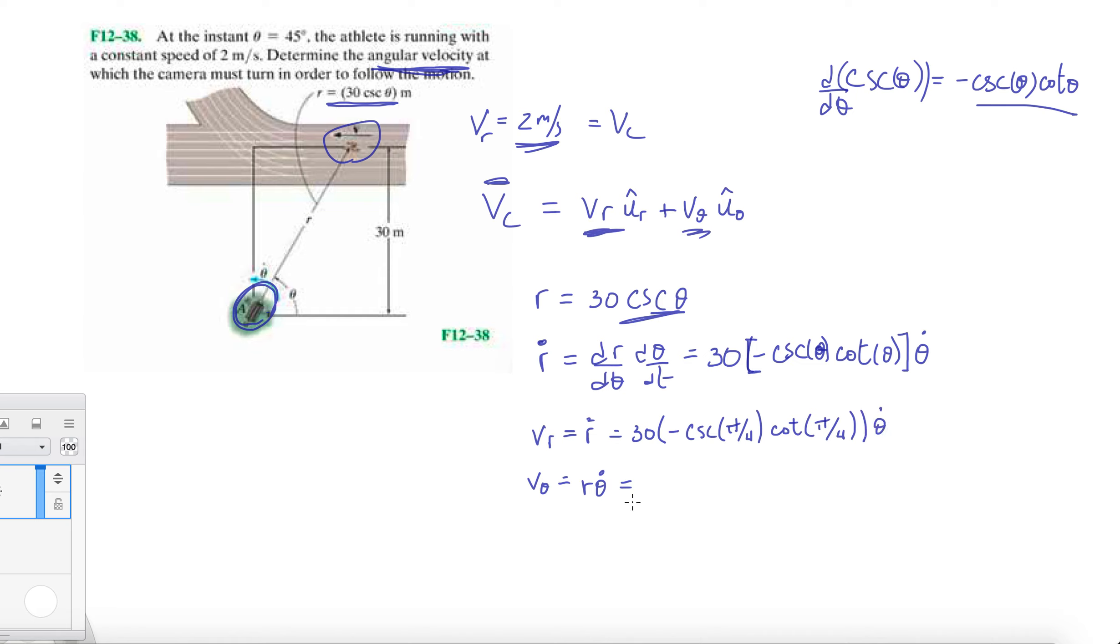And over here we have r is 30 cosecant theta, so 30 cosecant of pi over 4. Oops, I forgot one thing: times theta dot.